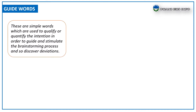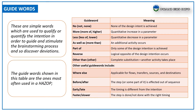Before discussing the examination phase, let us look at guide words. These are simple words used to qualify or quantify the intention in order to guide and stimulate the brainstorming process and discover deviations. The guide words include: NO — none of the design intent is achieved; MORE — quantitative increase in a parameter; LESS — quantitative decrease in a parameter; AS WELL AS — an additional activity occurs.